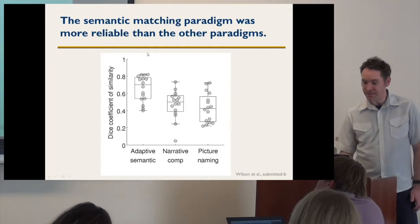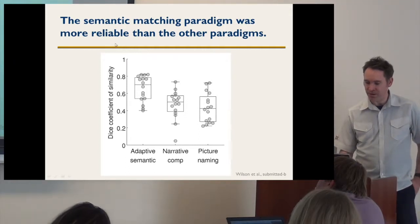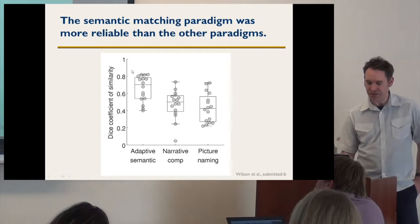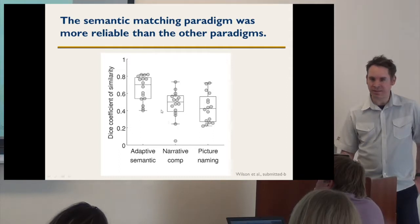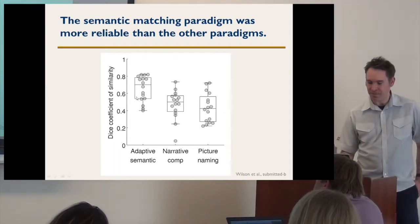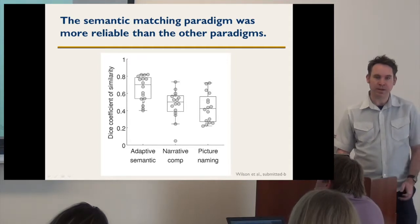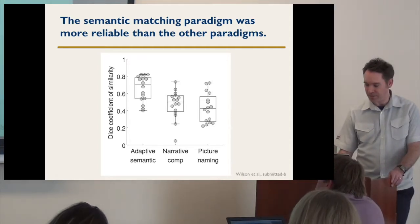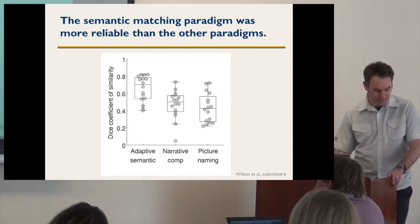Here's the statistical comparison of reliability — the distribution of Dice coefficients for the adaptive semantic task is higher than for the other two tasks. The other two tasks are far from terrible; it's certainly possible to do research using those paradigms. But the adaptive paradigm gives better test-retest reproducibility. I'll talk about why I think that is at the end.